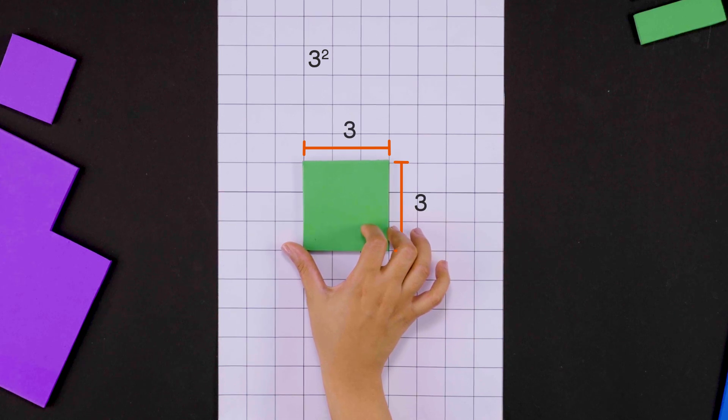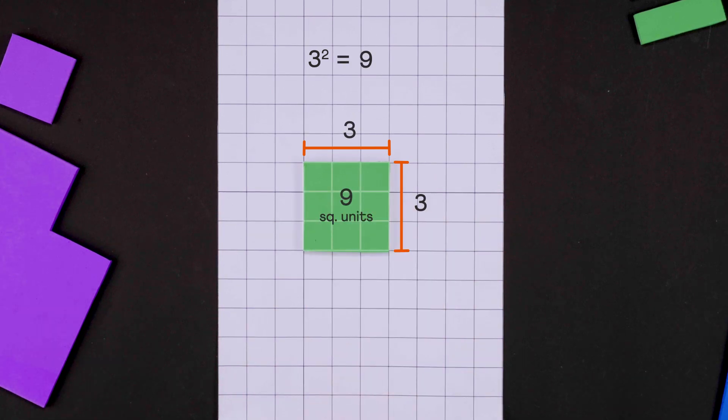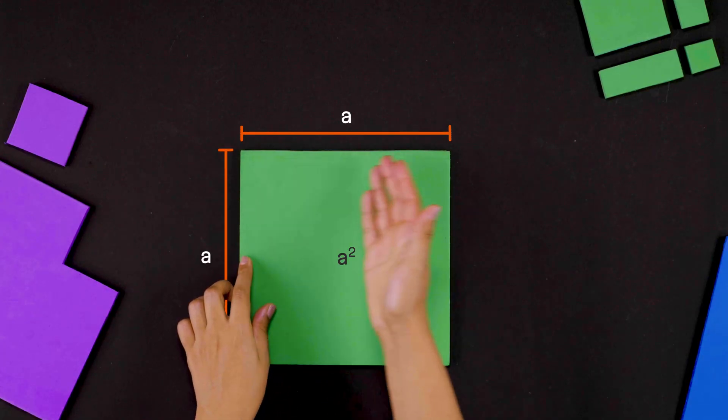The square of any number can be thought of as the area of a square. For example, 3 squared is the area of a square with side 3 units. That's 9 square units. Similarly, a squared is the area of a square with side a units.